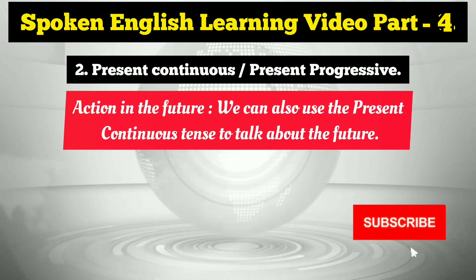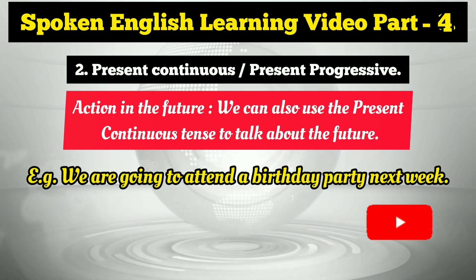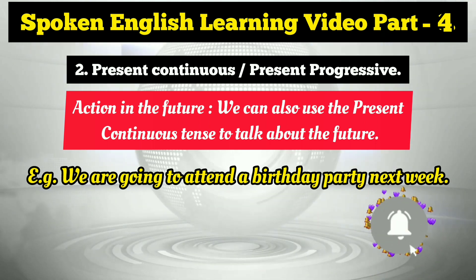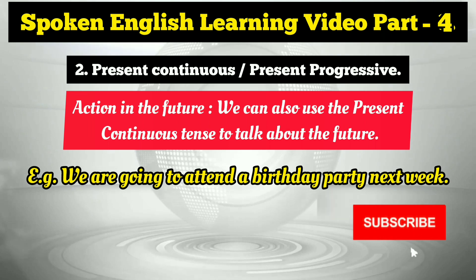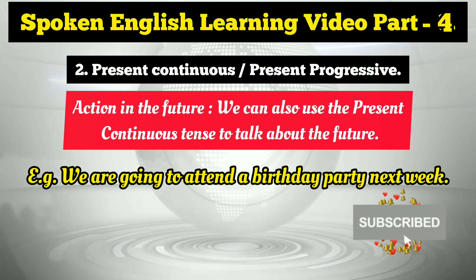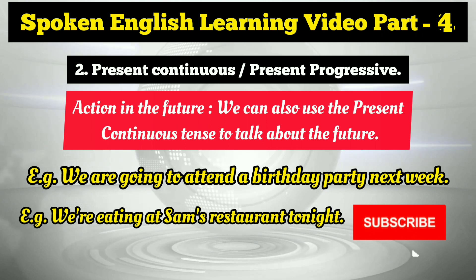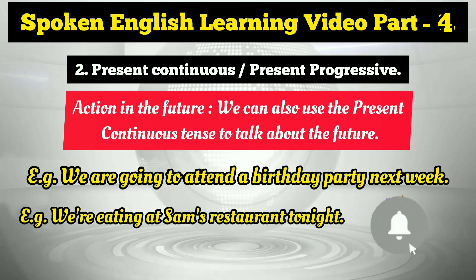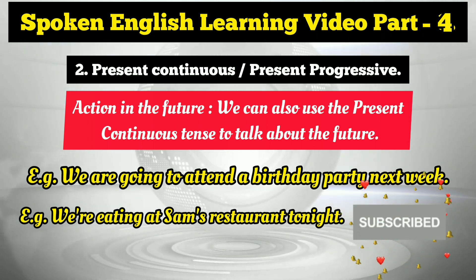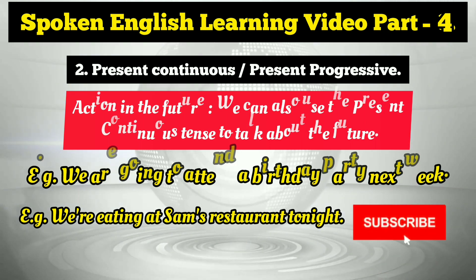The second situation where we use the present continuous tense is to talk about the future. For example: 'We are going to attend a birthday party next week' — I'm using continuous tense but talking about next week, which is in the future. Similarly: 'We are eating at Sam's restaurant tonight.' Not now, but tonight — talking about the future using the present continuous tense.